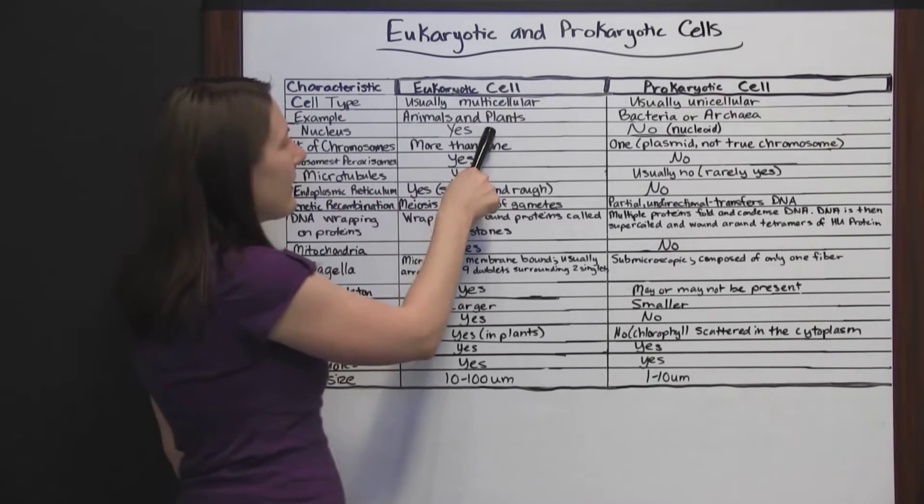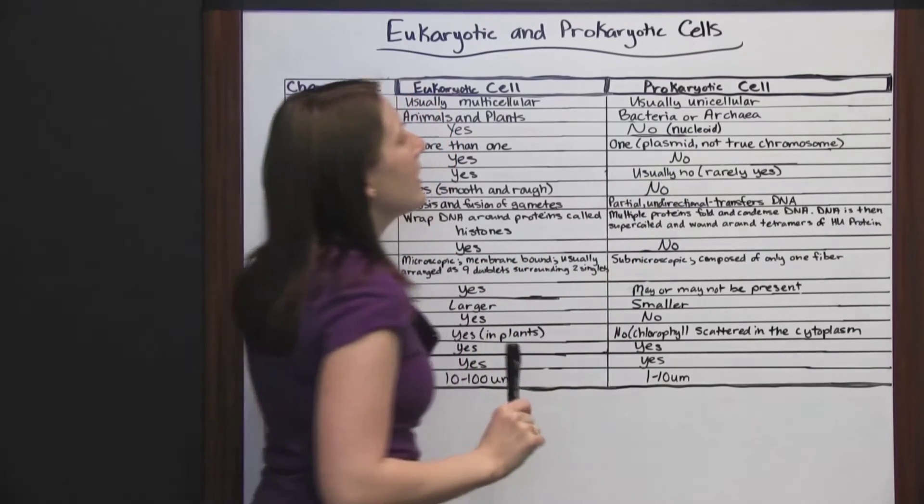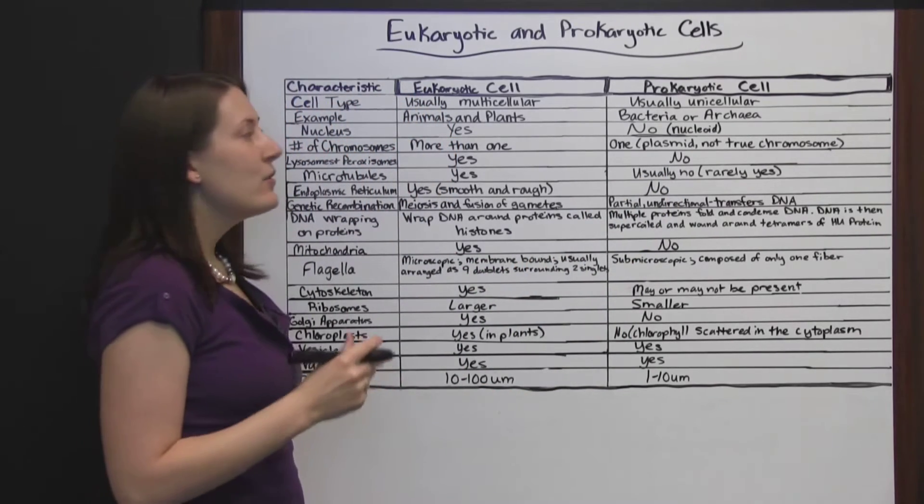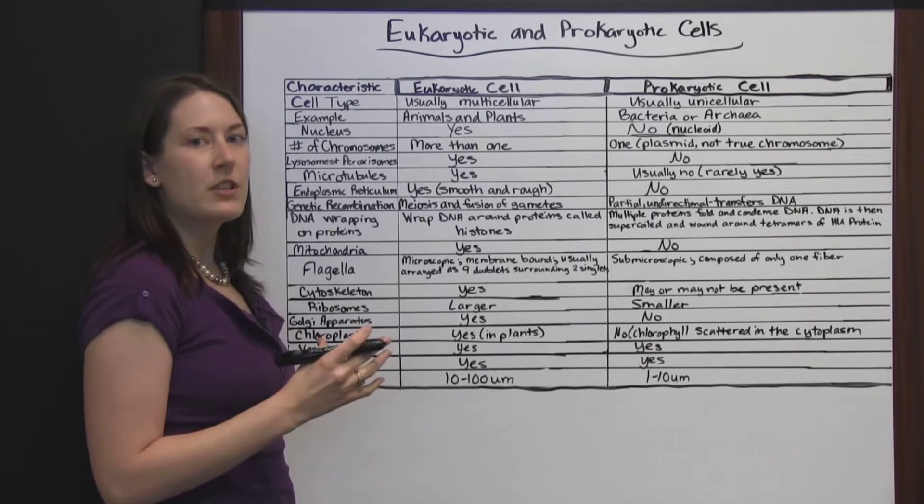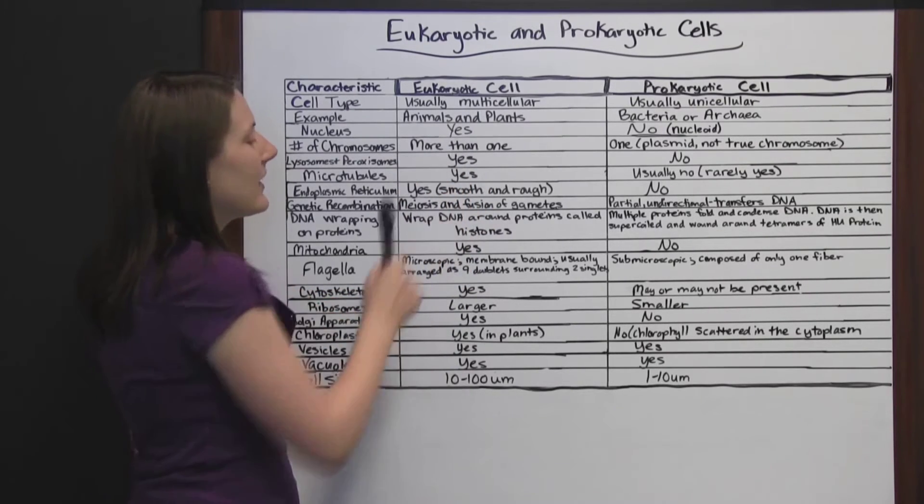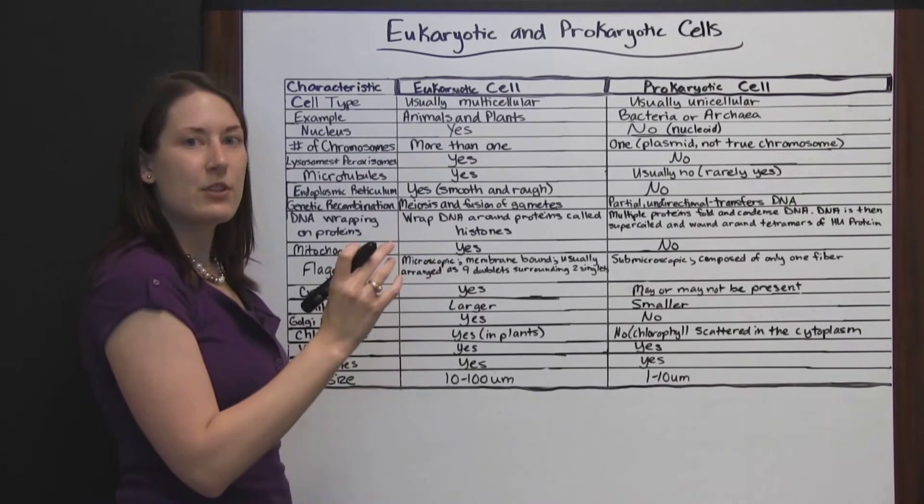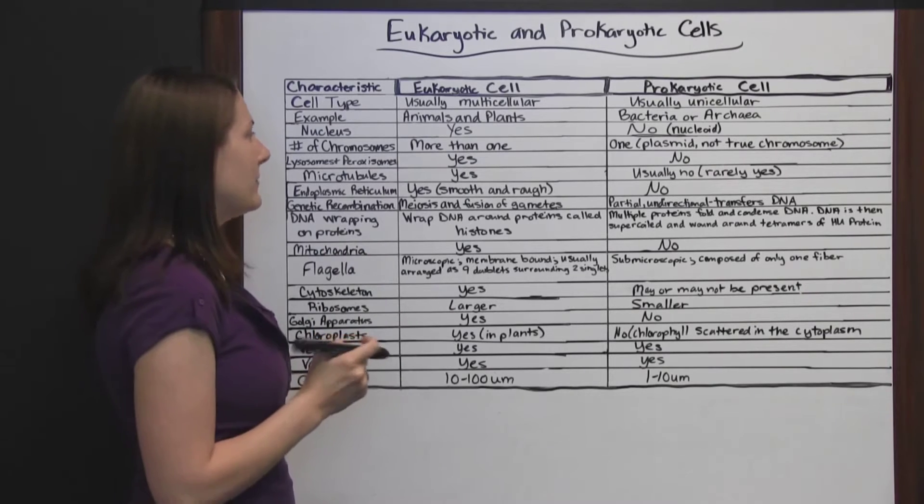Nucleus. Eukaryotic cells have a nucleus, and prokaryotic cells do not. They do have a nucleoid, which has nuclear material just kind of floating in the cytoplasm, where the eukaryotic cell has a nuclear membrane and keeps the nucleus separate from the rest of the cell.